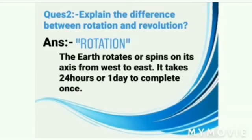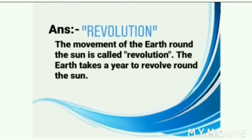Question number two: Explain the difference between rotation and revolution. Write the heading 'Rotation' with blue color pencil. Answer: The Earth rotates or spins on its axis from west to east. It takes 24 hours or one day to complete one rotation. Then write the heading 'Revolution' with blue color pencil.